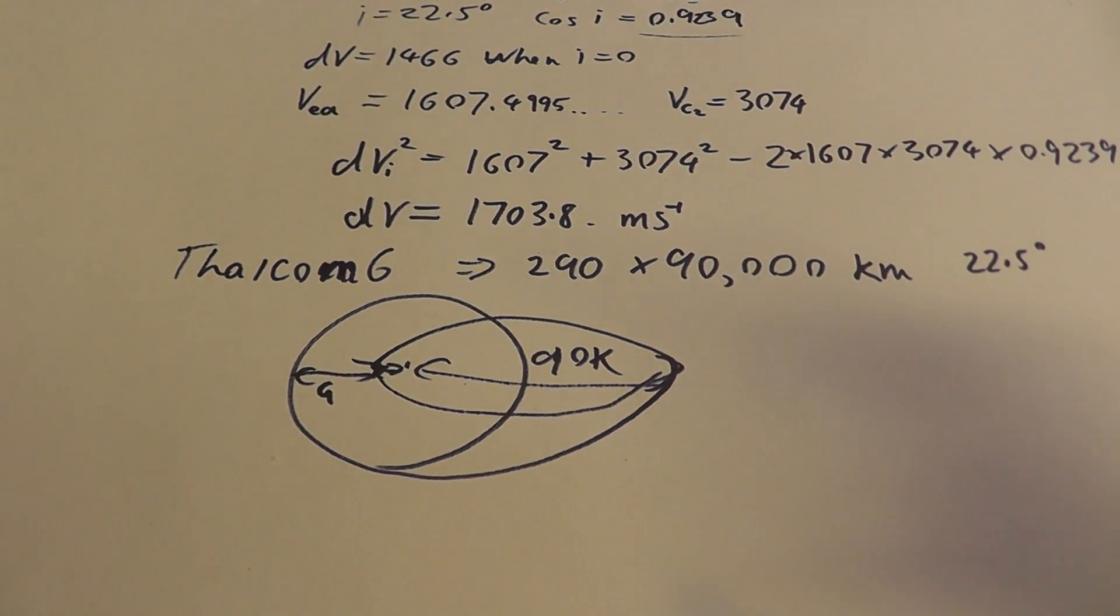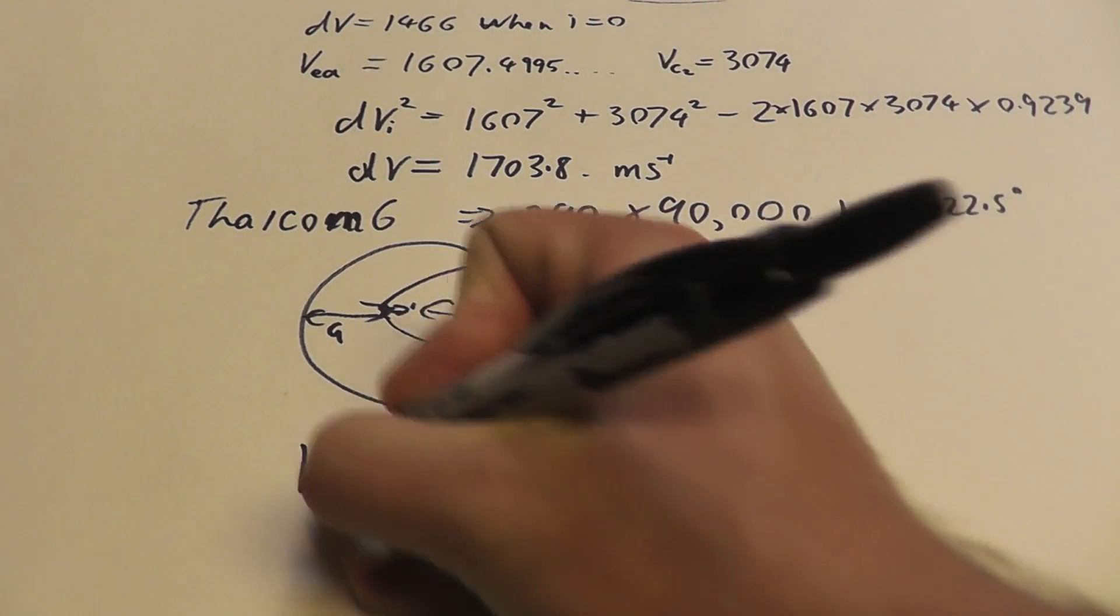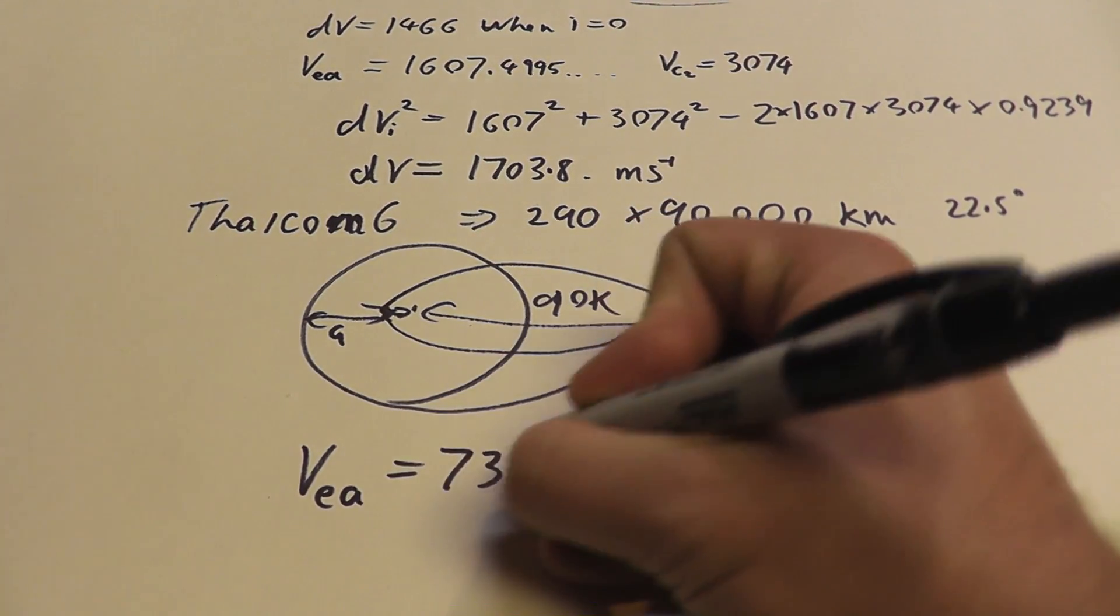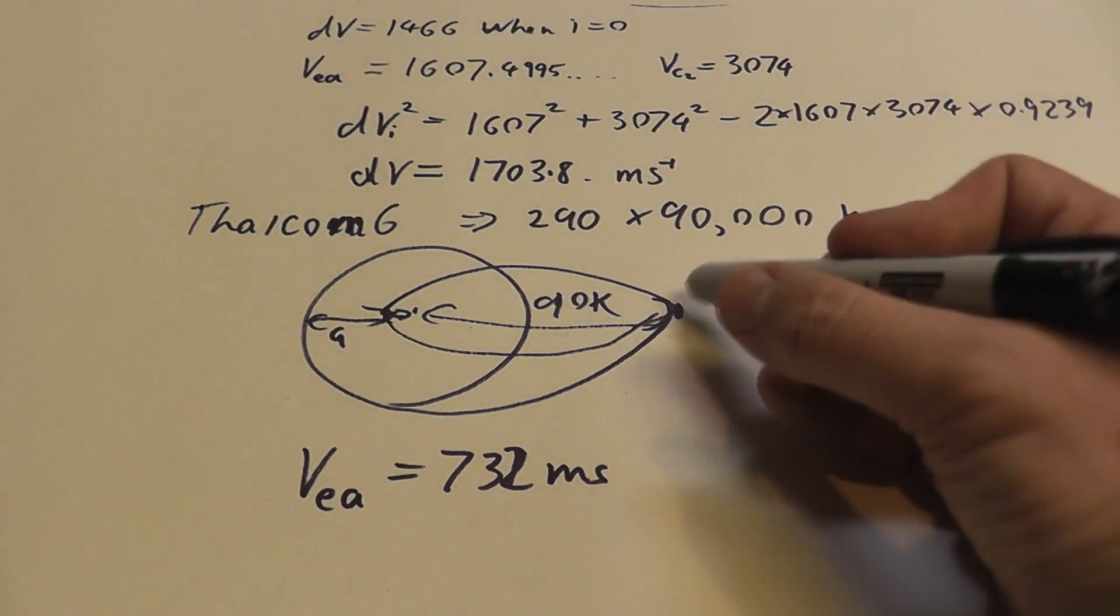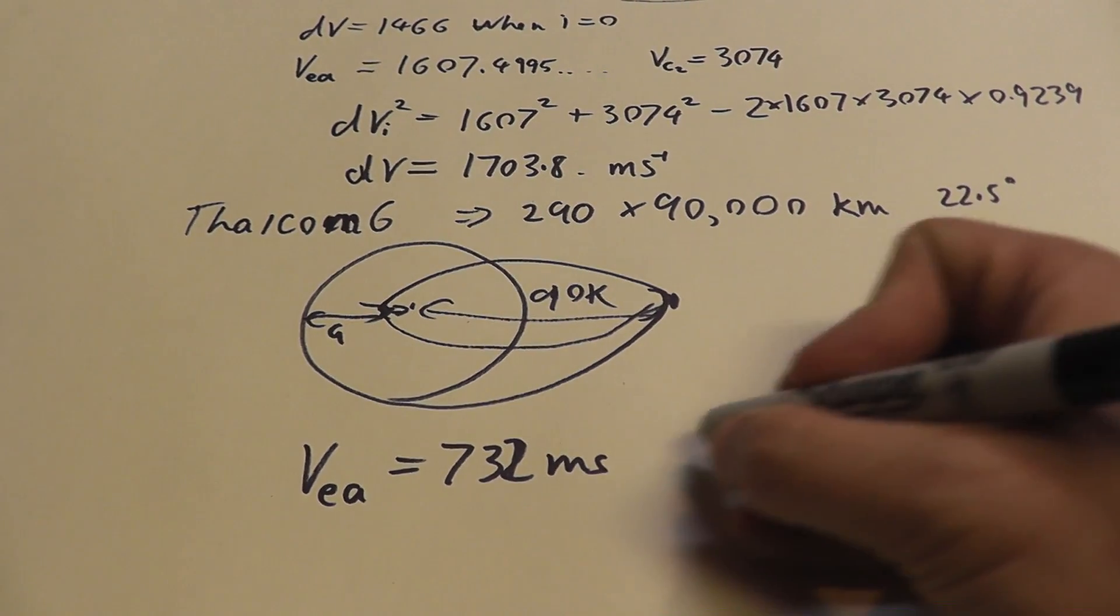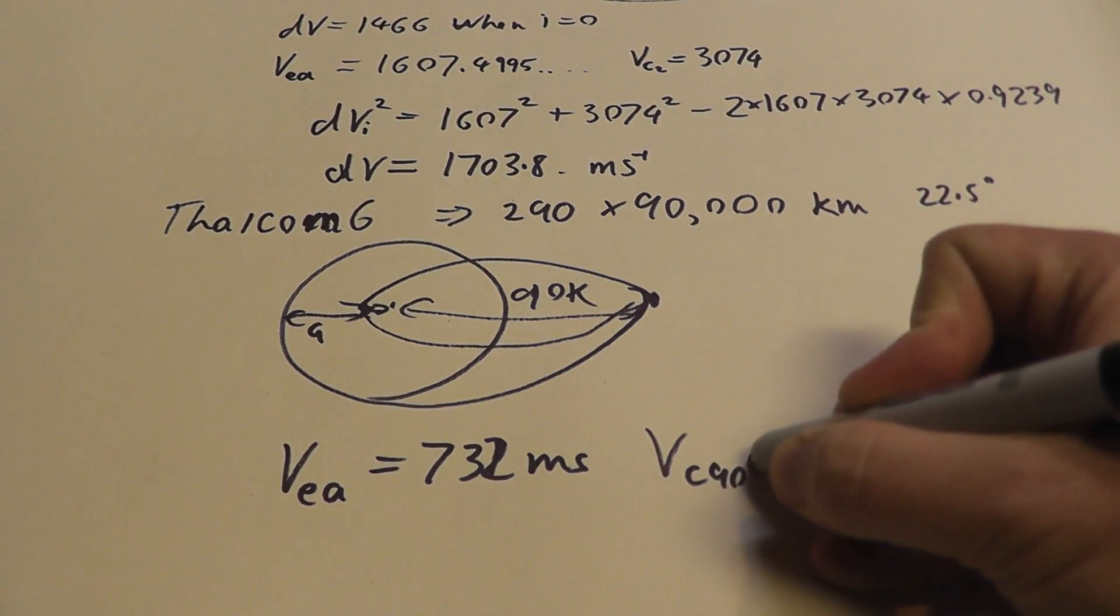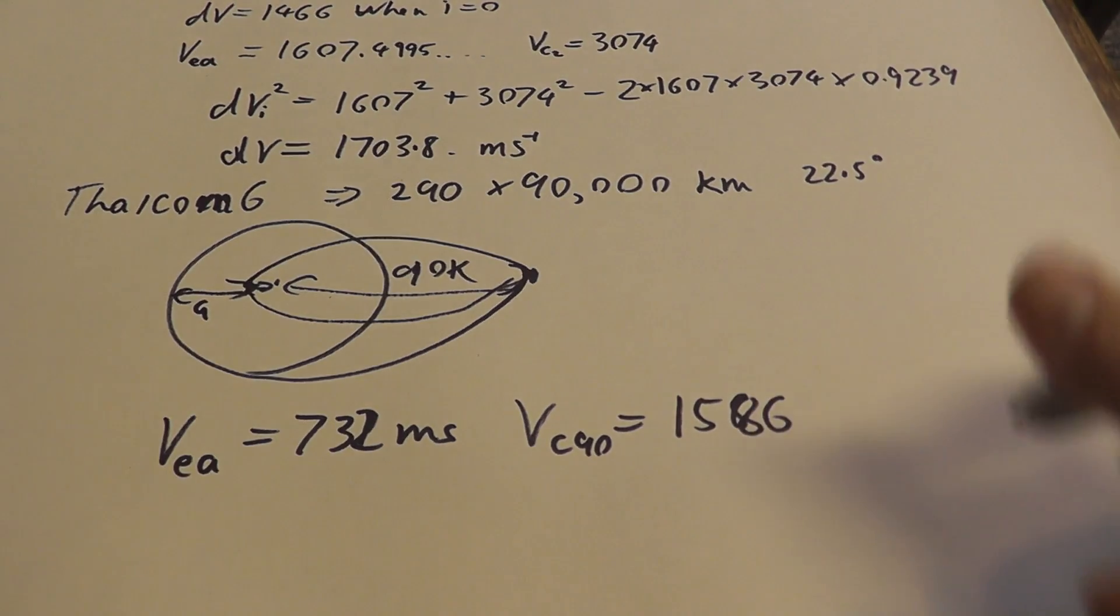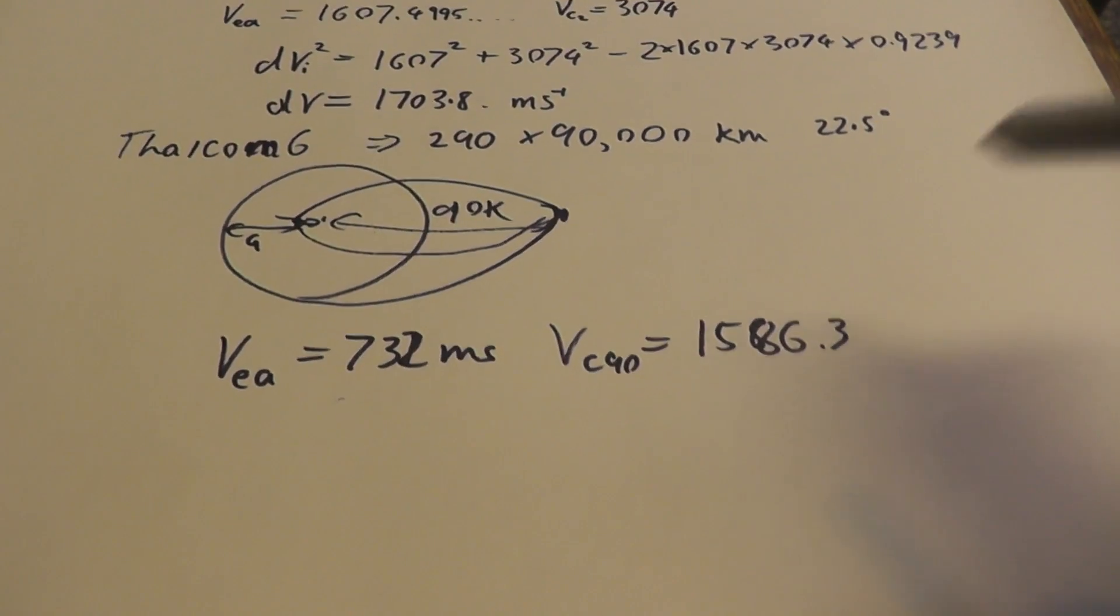It turns out that to go, if you do the inclination change here, you're actually moving a lot slower. This velocity eccentric at apoapsis is much, much lower. It's equal to 732 meters per second. So, that's the velocity up here before you go into this transfer orbit. That's when you make the inclination change. The target velocity, Vc at 90, is equal to 1586.3 meters per second. When you include the inclination change in, we follow this same equation.